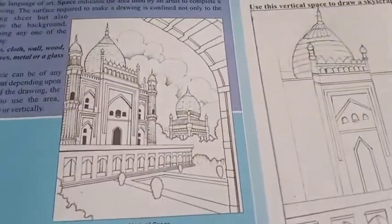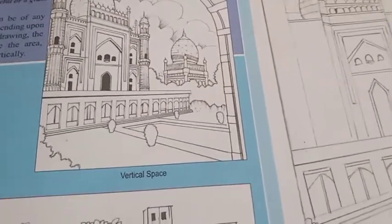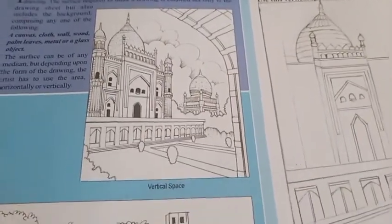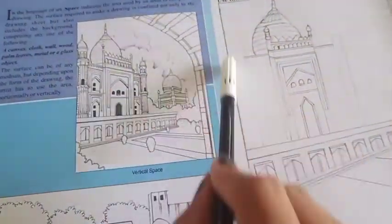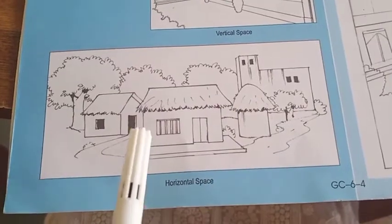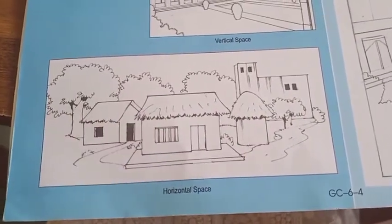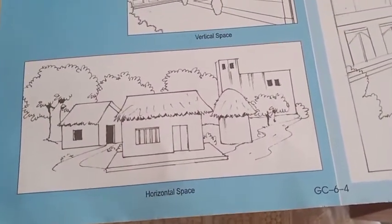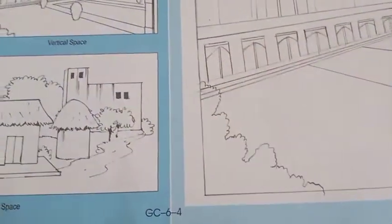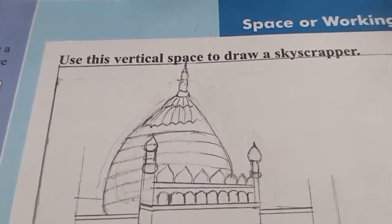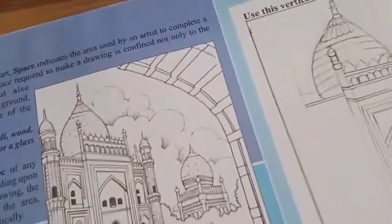Space is the element of drawing and it's up to you how you use it. Here is a skyscraper drawing — you can see the space is in the vertical direction. Below it, there are huts, houses, bushes, and trees drawn in the horizontal direction. That rectangle is called the horizontal space.